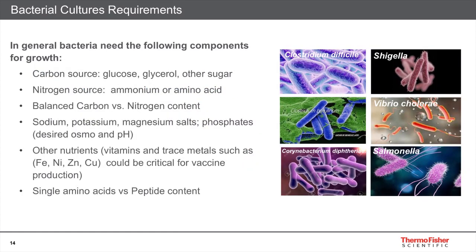Bacteria generally need carbon and nitrogen sources, inorganic phosphates and sulfur, trace metals, and vitamins for growth and production. These are readily available in most peptones. We can also provide analysis data for each peptone composition to identify the optimal nutrition required to meet your culture needs.